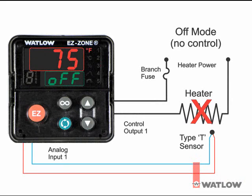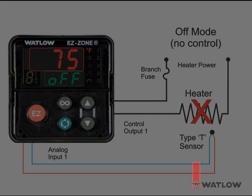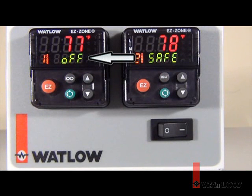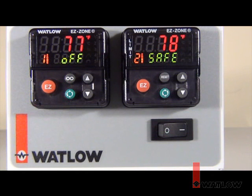In off mode, the control outputs are set off, or to the minimum analog value. Therefore, there is no control. The lower display indicates off in place of the active setpoint. The controller still updates the readings from the sensor if connected. The controller indicators stay off to indicate no output activity.